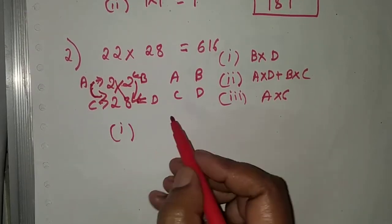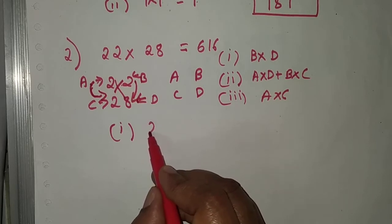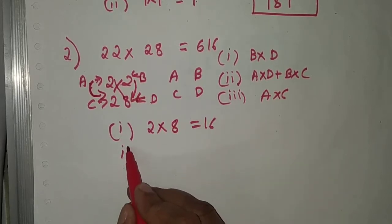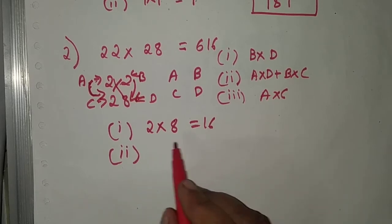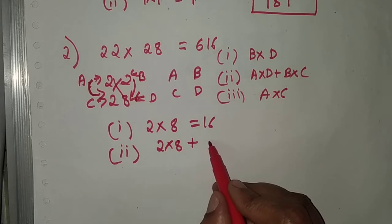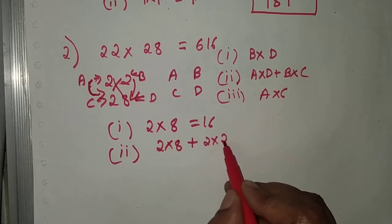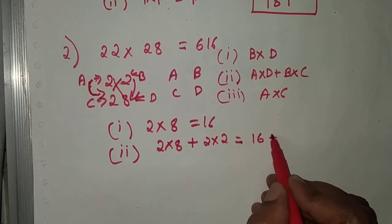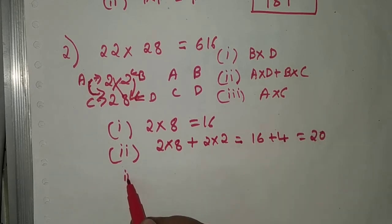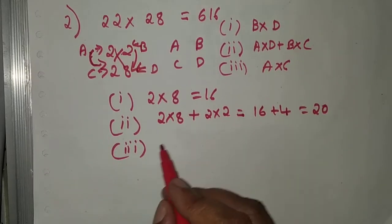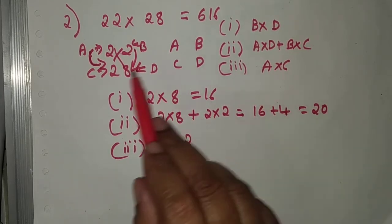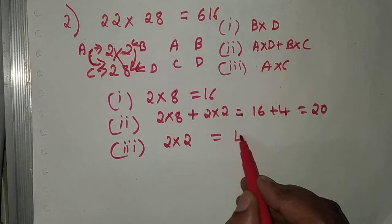First step: B into D is 2 into 8, equal to 16. Second step: A into D is 2 into 8 plus B into C which is 2 into 2, giving 16 plus 4, equal to 20. Third step: A into C is 2 into 2, equal to 4.